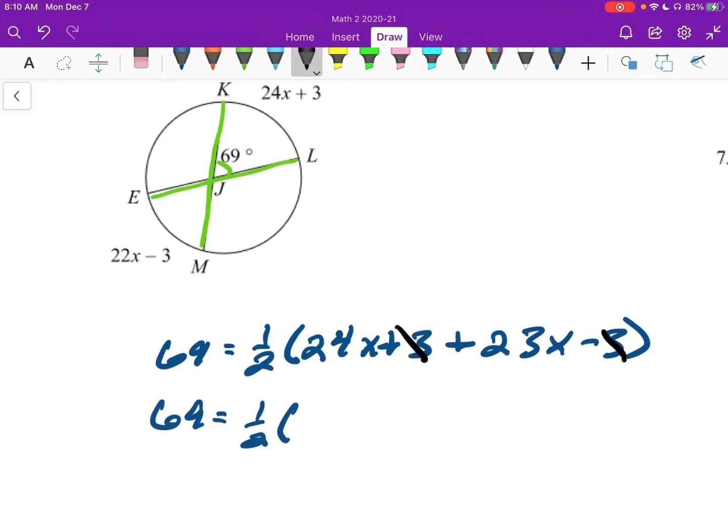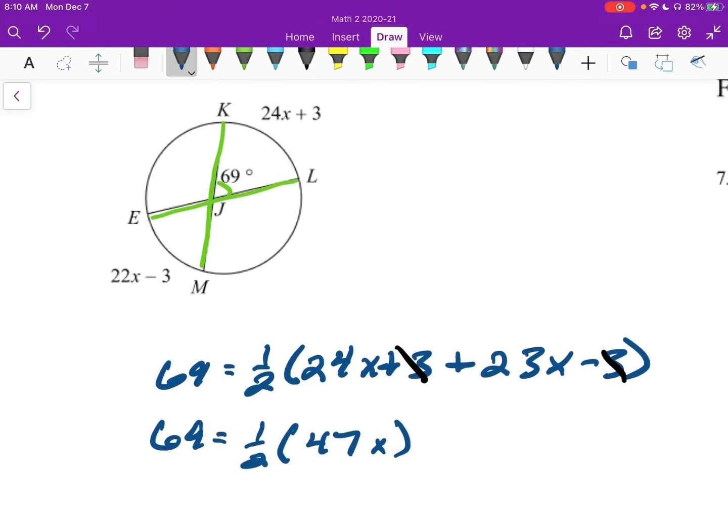I'll combine up what's in my parentheses. So this is going to be 69 equals one half. So my plus 3 and my minus 3 cancel. And then 24 and 23 gives me 40, 4, 5, 6, 7, 47. Is that right? Hmm. That does not look right. Oh, I dropped. That should be a 22 right here. So that 47 should be a, what should that be, 46. All right. That looks better.